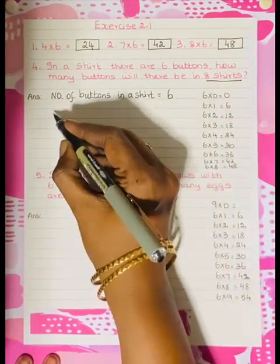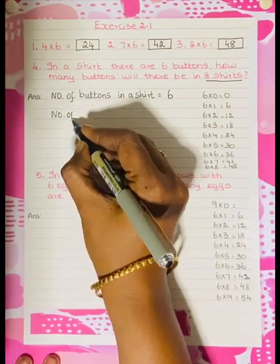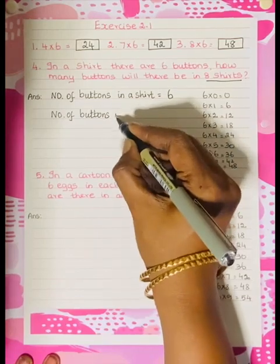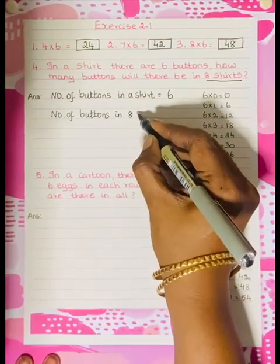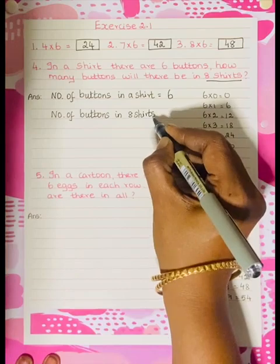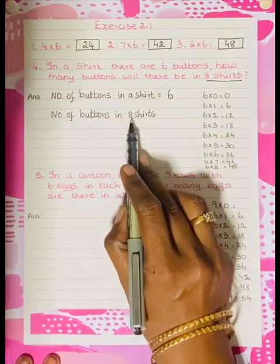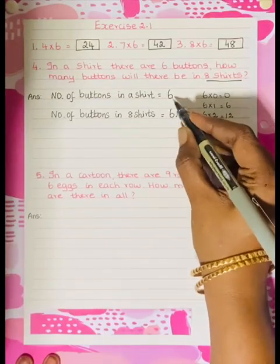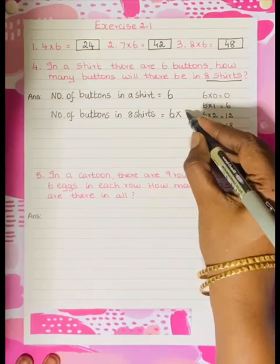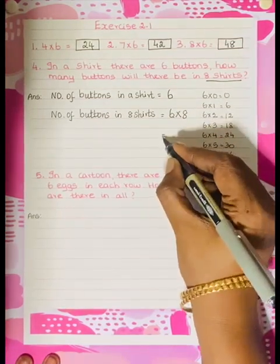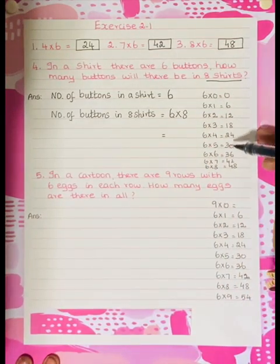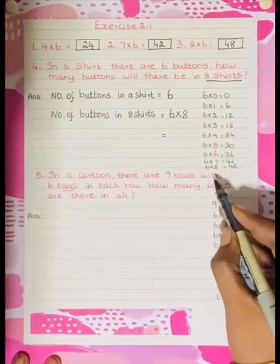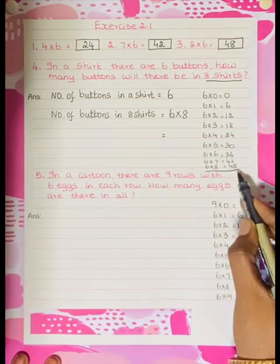So next one will be number of buttons in 8 shirts. A shirt means it's a plural, so shirts is equal to 6×8. So one shirt is 6 buttons, so 6 buttons into 8 shirts is equal to 6 eights. You have to write the 6 tables in the rough column. So 6 eights are, what is 6 eights? 6 eights are 48.